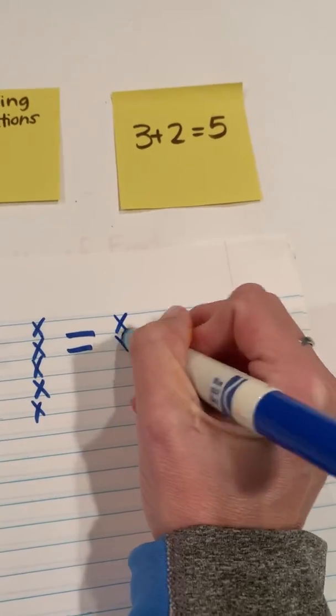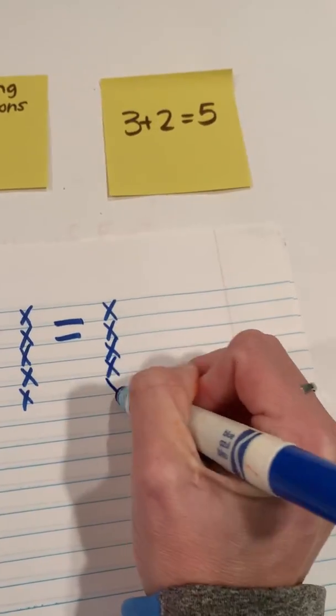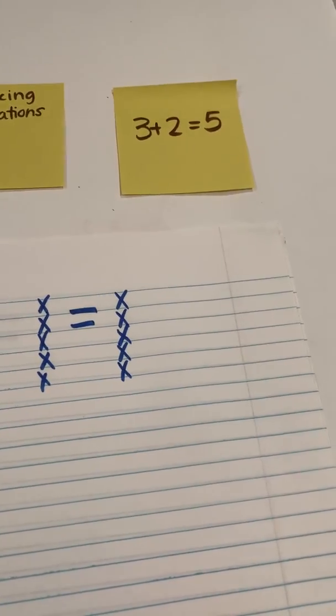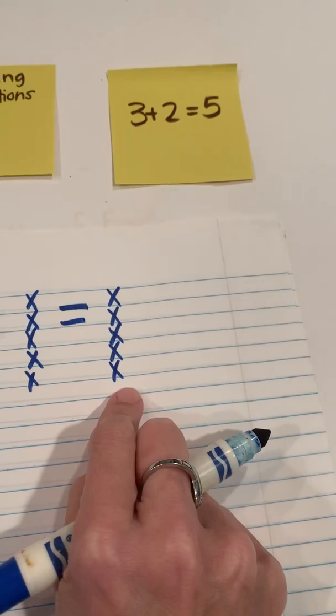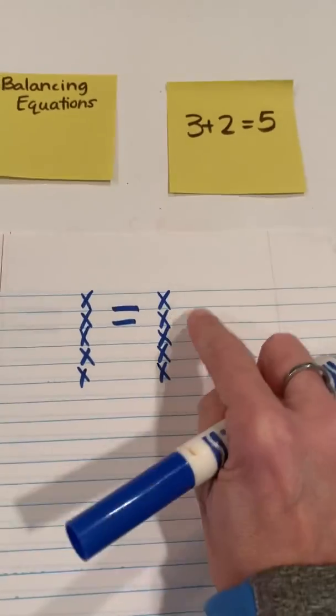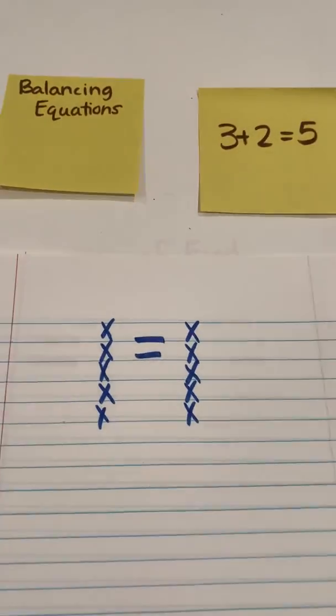And then I'm going to represent 5 over here, trying to keep my X's all the same. Then I'm going to look and say, is that true? Is 3 plus 2 equal to 5 or the same as 5? And that's true. Yes it is. You can see I started at the same place and ended at the same place.